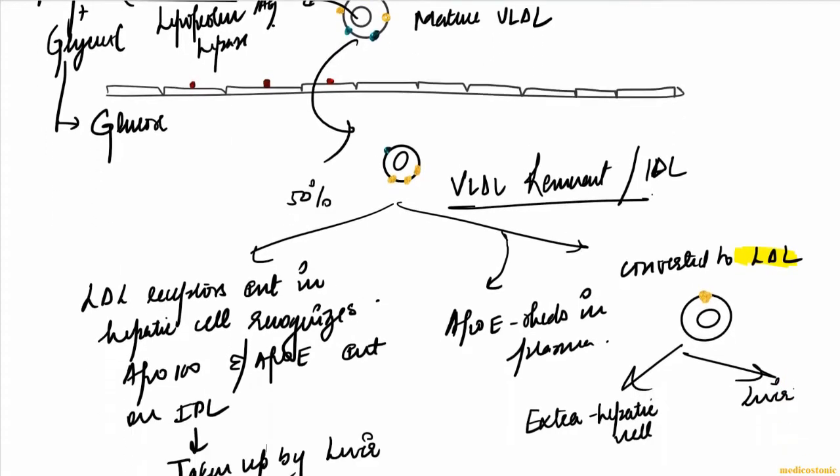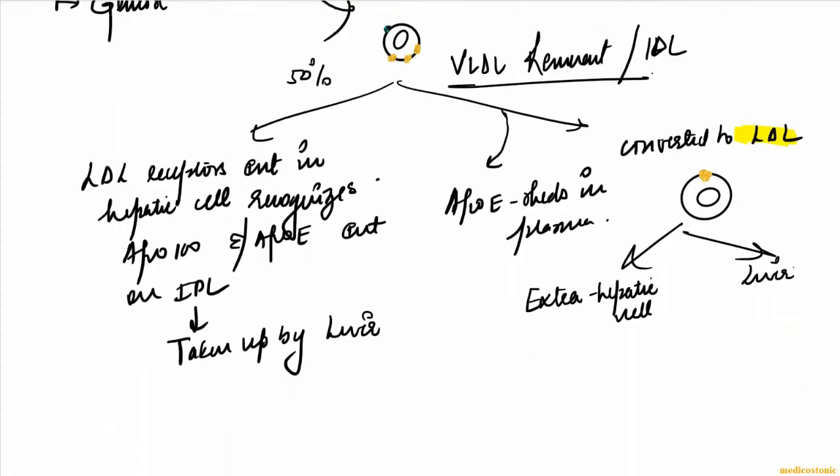There are two fates of intermediate density lipoprotein. One is that the LDL receptors which are present in the hepatic cell will recognize the apo B100 and apo E which are present on the VLDL remnant, and then they are taken up by the liver.